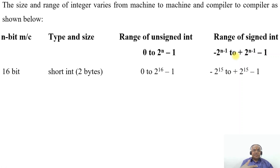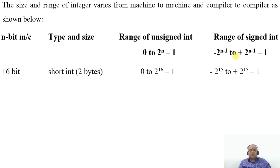Suppose if you are considering a 16-bit machine, the short int type has a size of 2 bytes. Applying n equal to 16: for unsigned int, the range is 0 to 2 to the power of 16 minus 1. For signed int, it ranges from minus 2 to the power of 15 to plus 2 to the power of 15 minus 1.